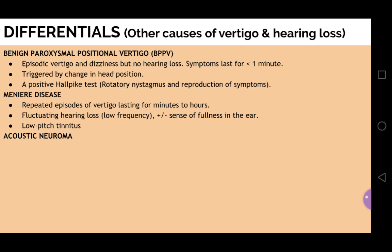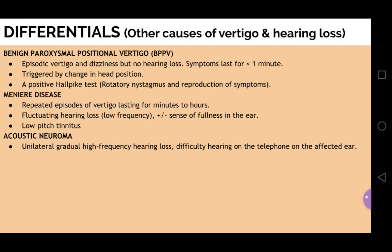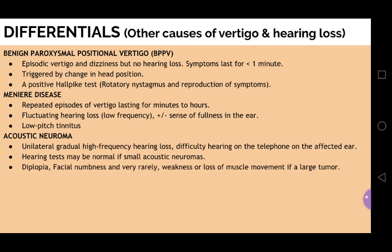A third important differential is acoustic neuroma, which is a benign tumor of the vestibulocochlear nerve. There is unilateral gradual high-frequency hearing loss. Difficulty hearing on the telephone on the affected ear is a common complaint. If the tumor is small, the hearing test may be normal. If the tumor is large, the patient may have diplopia, facial numbness, and very rarely weakness or loss of muscle movements on the affected side. MRI will confirm a tumor involving the vestibulocochlear nerve.